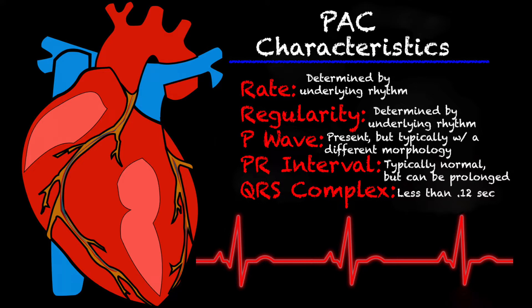Your P wave with a PAC is present but it's typically a different morphology. The P wave is usually present and upright, but it looks a little bit different than the other P waves. Your PR interval is typically normal but can be a little bit prolonged, and the QRS complex is usually narrow, or less than 0.12 seconds.